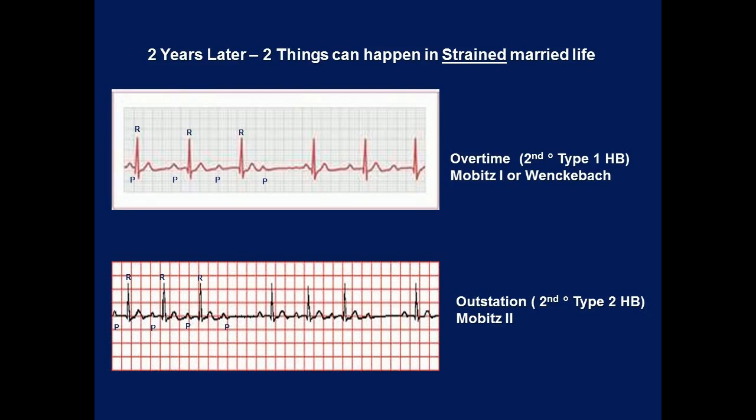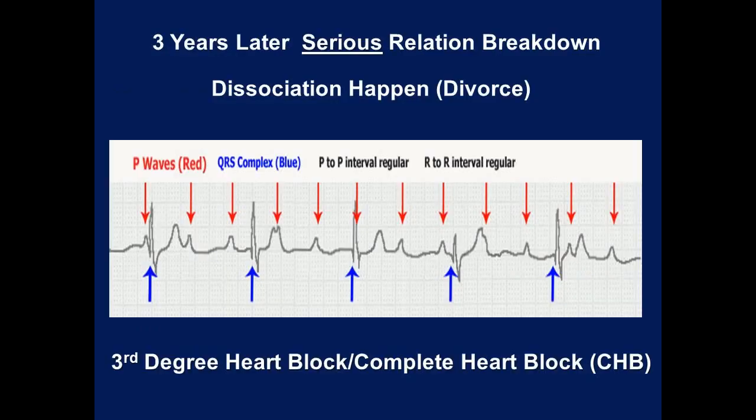Three years later, serious relationship breakdown happens and both are not on talking terms — they do their own things without synchronization. Rossley (R) asked for a divorce. Now there is a dissociation in the relationship — a dissociation between Pazia (P wave) and Rossley (R wave). This is what we call AV dissociation in ECG language.